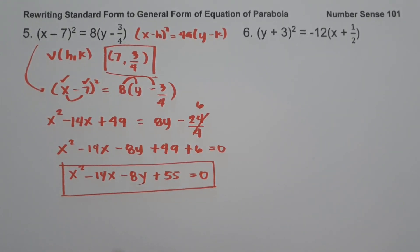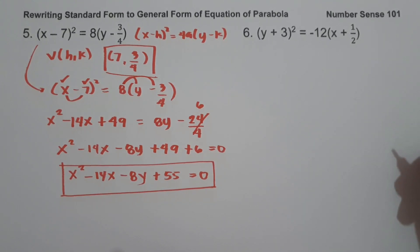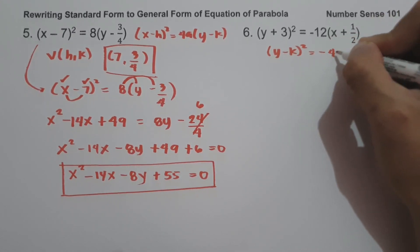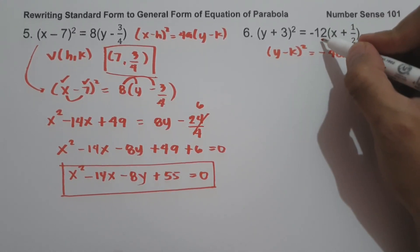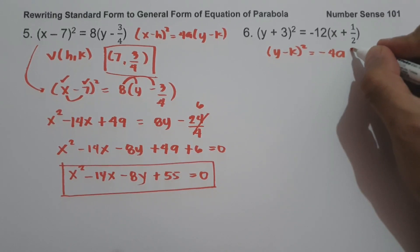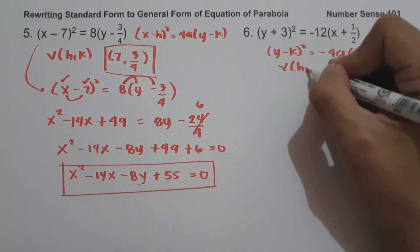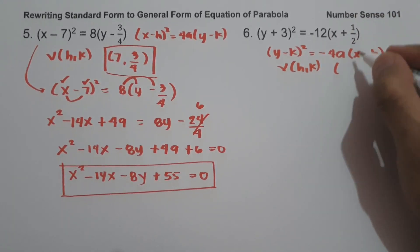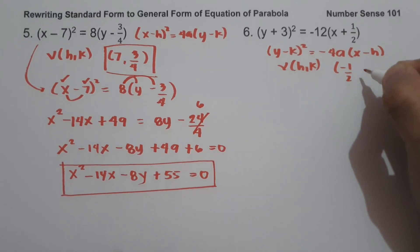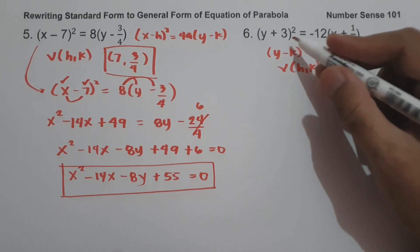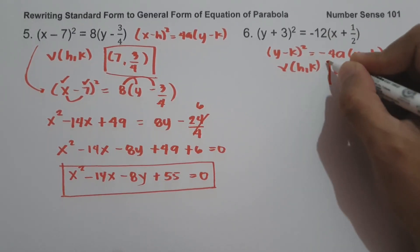On our last example, we have (y + 3)² = −12(x + 1/2). The equation is written in the form (y − k)² = −4a(x − h), because 12 is negative. The vertex is h and k: the value of h is negative 1/2, that is the opposite sign of positive 1/2, and k is negative 3. And this will be our vertex.